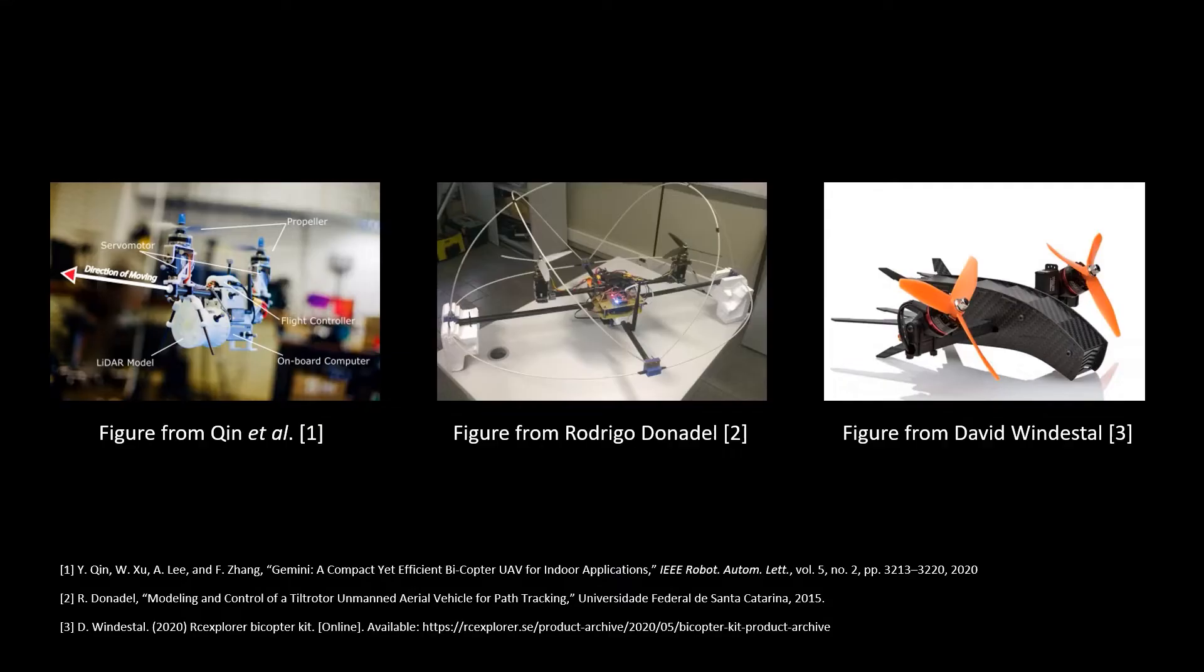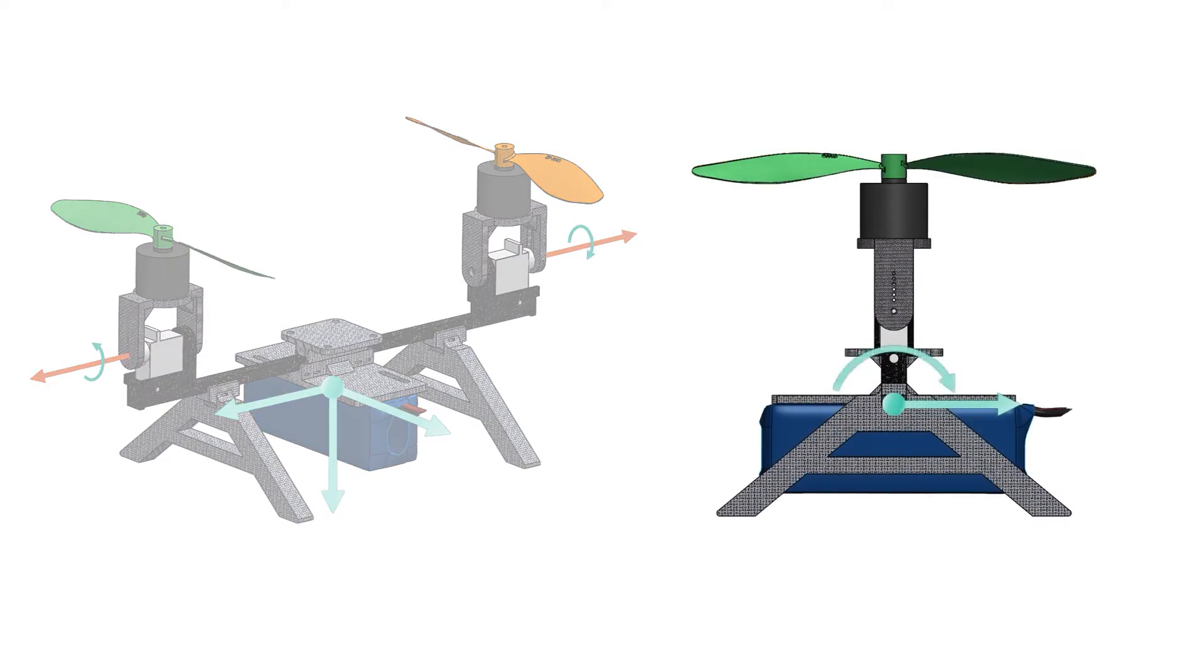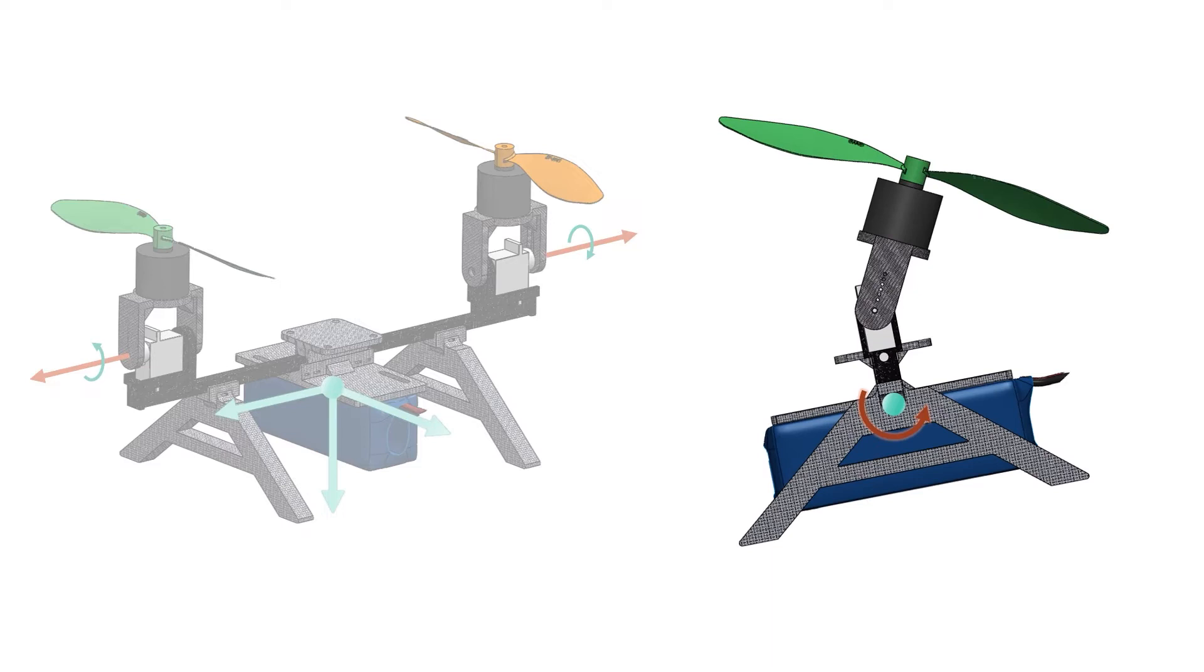One of the main challenges shared by state-of-the-art bicopter designs is the non-minimum phase property on certain axes. The center of mass is usually placed below the servo rotation axis to tilt the platform forward. The servo tilts clockwise. By doing so, it generates a reaction torque that slightly tilts the platform towards the opposite direction of desired rotation.